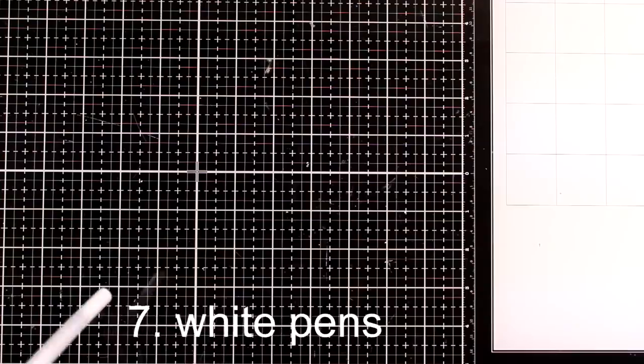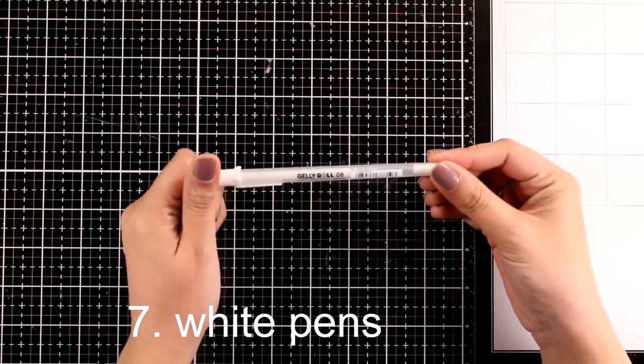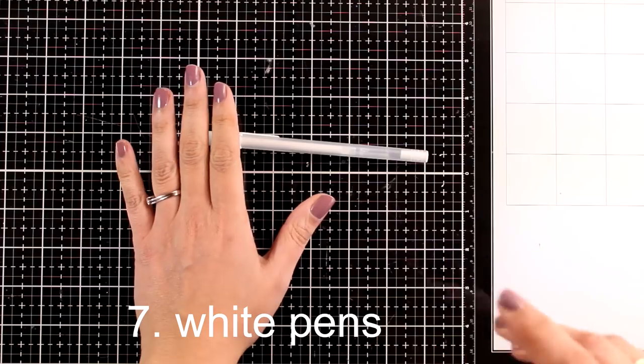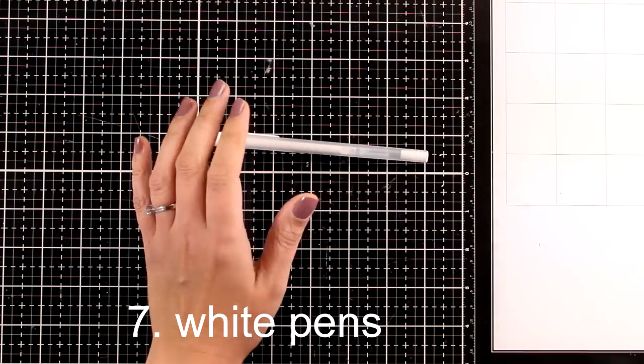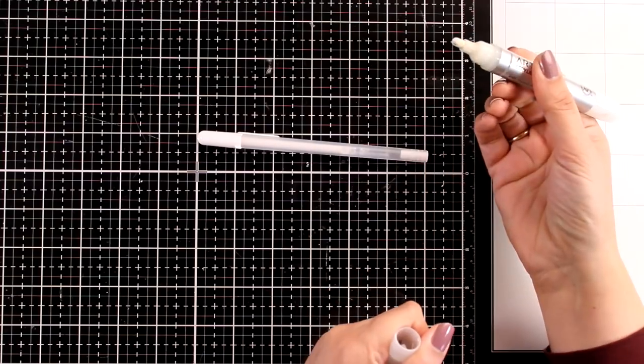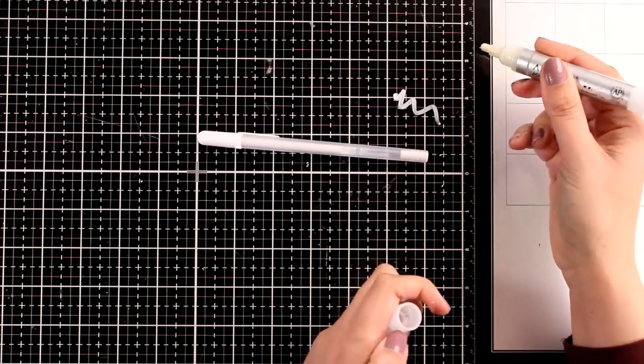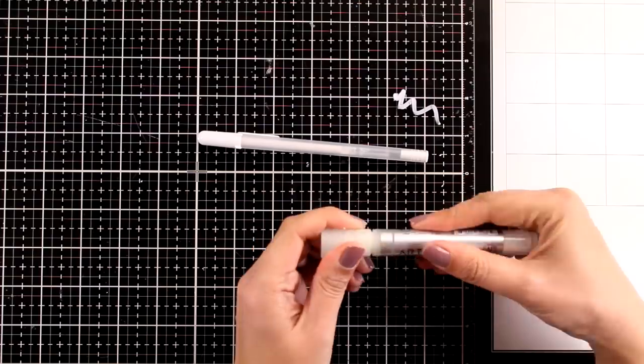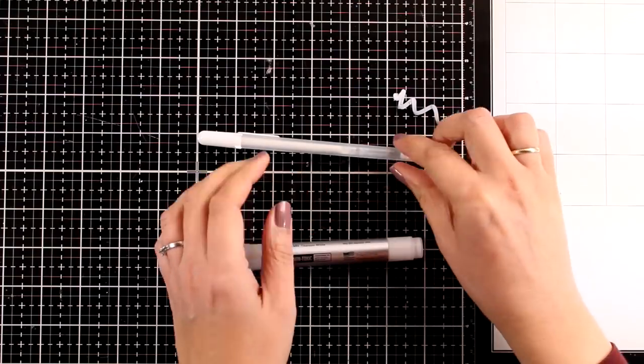Now, if you follow my art journal journey, you already know that I cannot live without my white highlights. There are many different types of pens that you can use for that. You can go with paint pens, which have acrylic paint inside. Or you can go with gel pens, which I use many times as well.